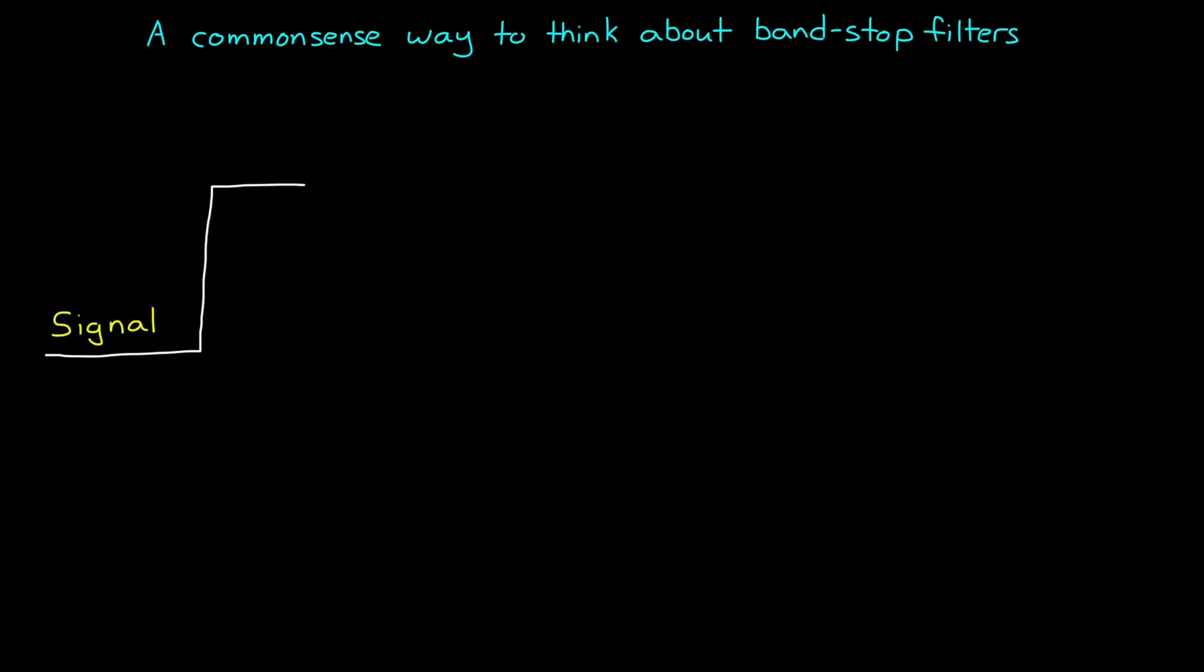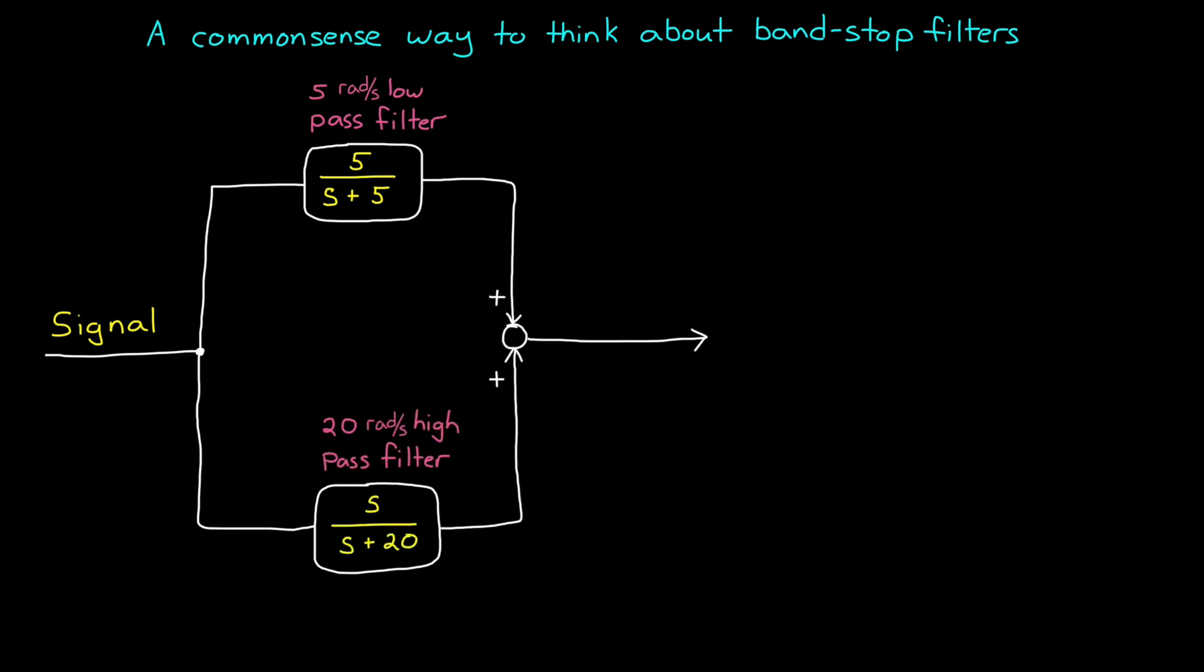We can take a signal, pass it through a low-pass filter to keep the low frequencies, and pass it through a high-pass filter to keep the high frequencies, and then sum the results. This would block the batch of frequencies that don't make it through either filter.